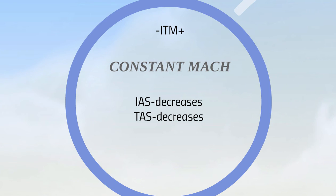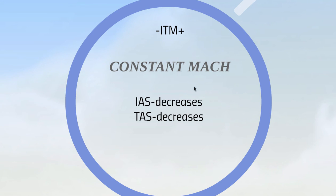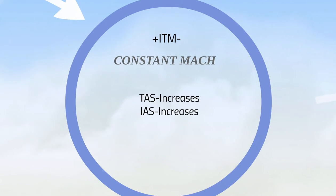If you hold a constant Mach in a climb, the positive is on the right and the negative is on the left. Everything to the left of M is going to decrease, so true airspeed decreases and indicated airspeed decreases as well.